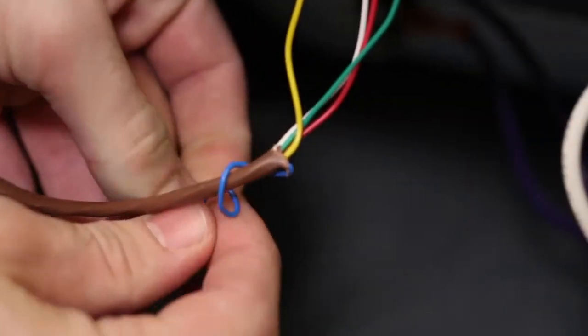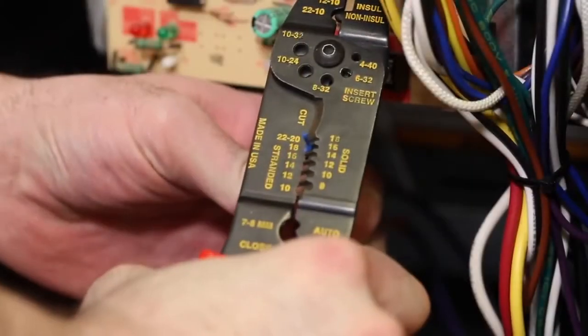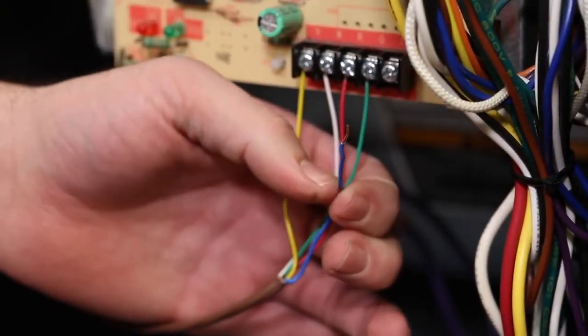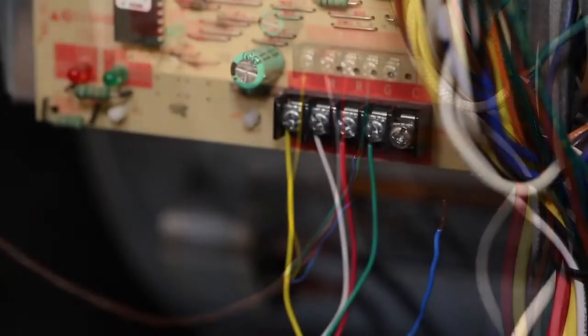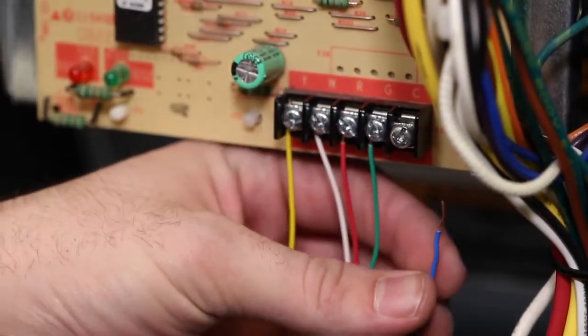Unwrap this wire and bring it to the control terminal board. Using a wire stripper, expose a quarter inch of wire at the end and screw it to the C terminal on the control board.